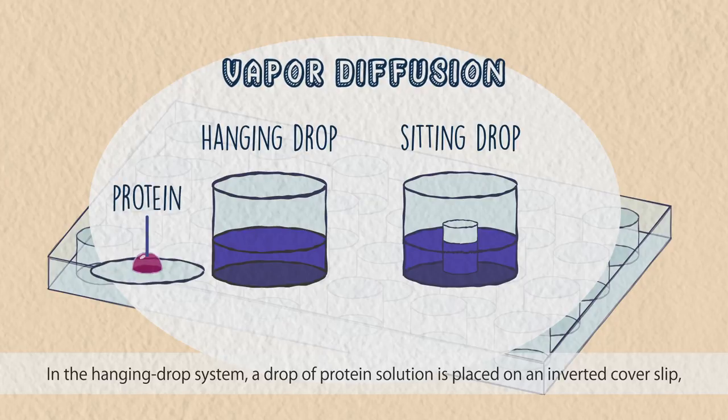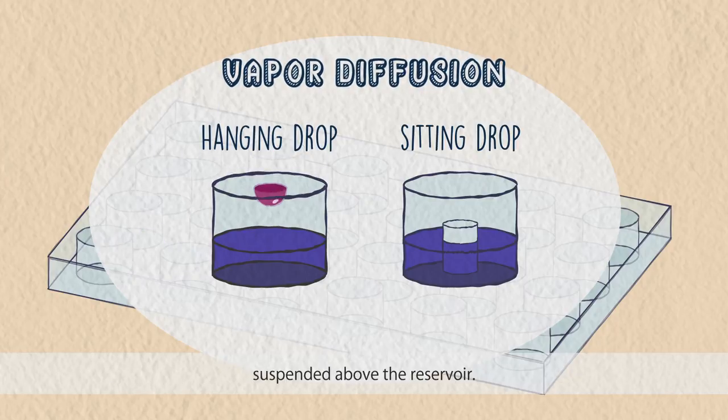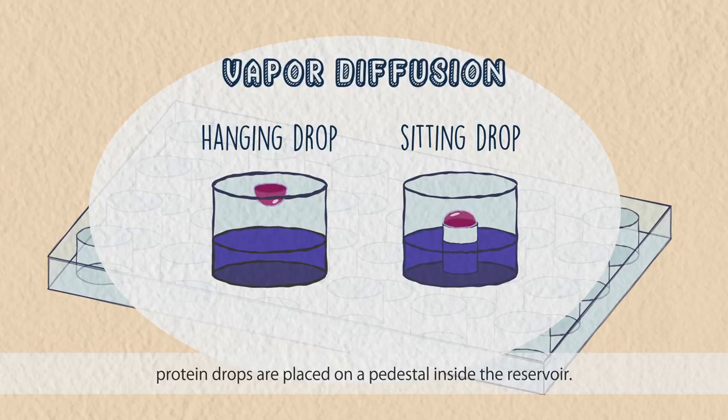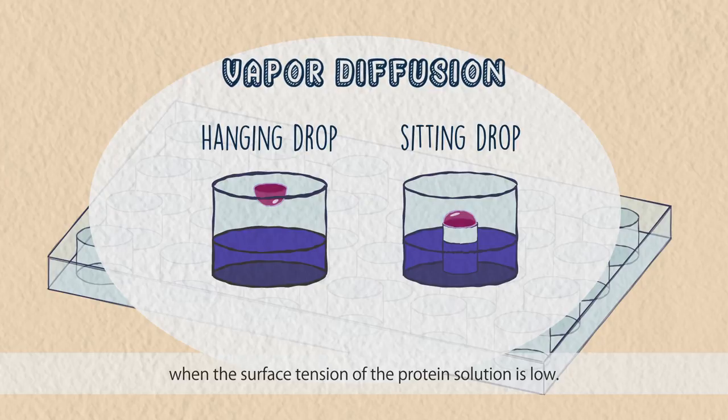In the hanging drop system, a drop of protein solution is placed on an inverted cover slip, suspended above the reservoir. While in the sitting drop system, protein drops are placed on a pedestal inside the reservoir. Sitting drop system is usually applied when the surface tension of the protein solution is low.